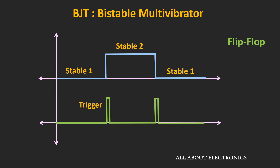In this way, this bistable multivibrator can be used as a flip-flop, or it can be used to generate a gate pulse of finite duration. For example, when the set trigger pulse is applied, the output will go from the low state to the high state. And similarly, when the reset trigger pulse is applied, the output will go from the high state to the low state. The duration of the gate pulse will depend on the triggering instances of the set and reset pulses. In this way, we can generate a gate pulse of finite duration, and this gate pulse can be used to control any other circuit or instrument.